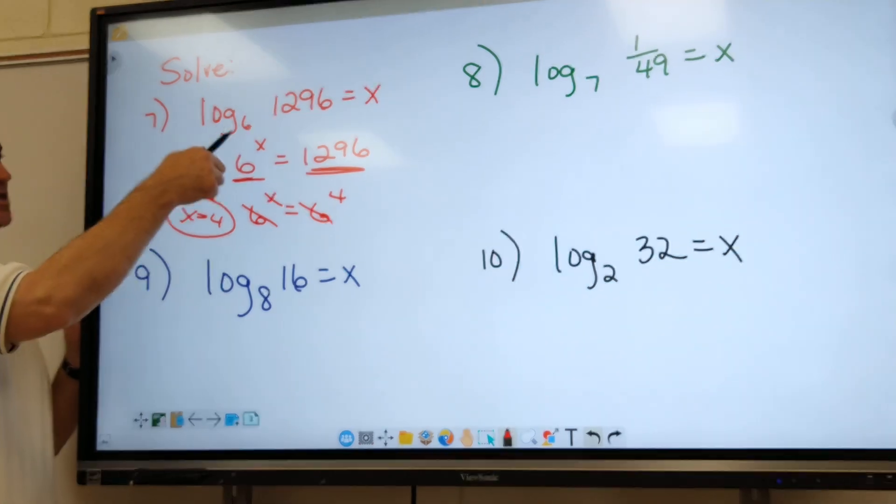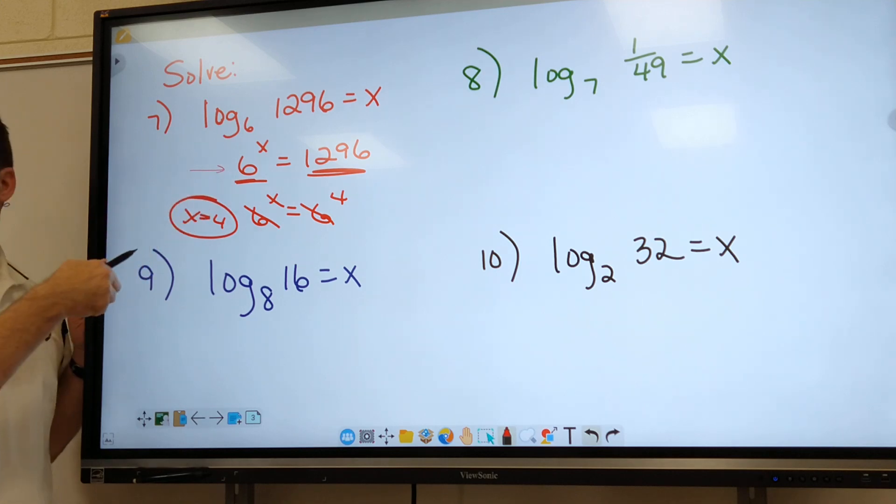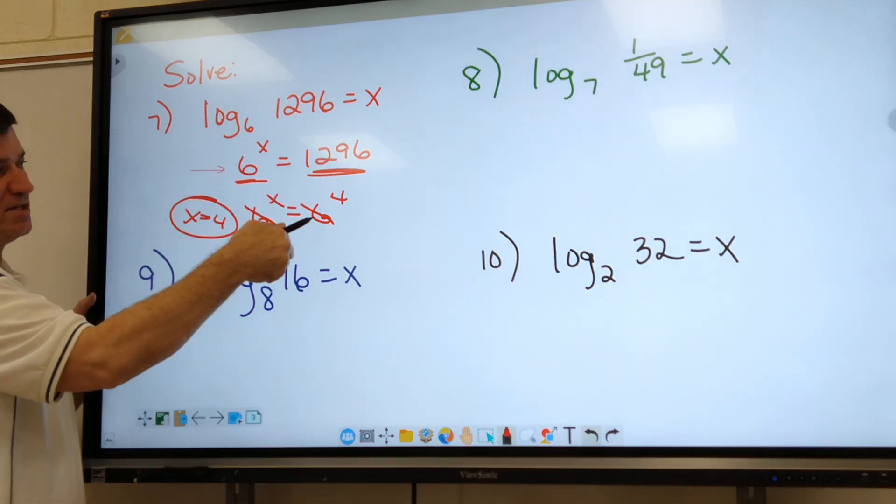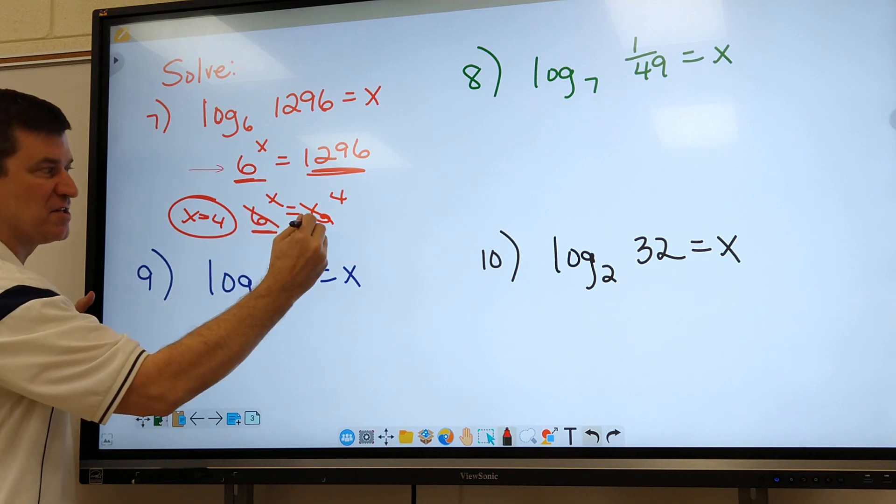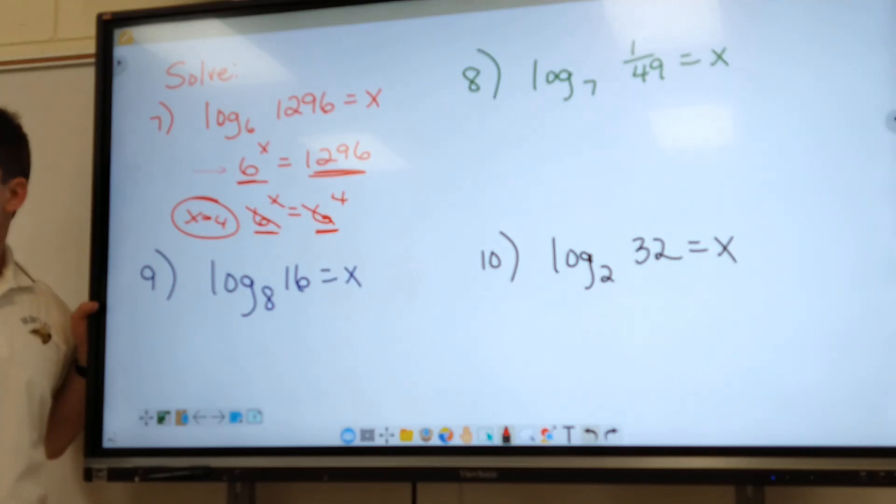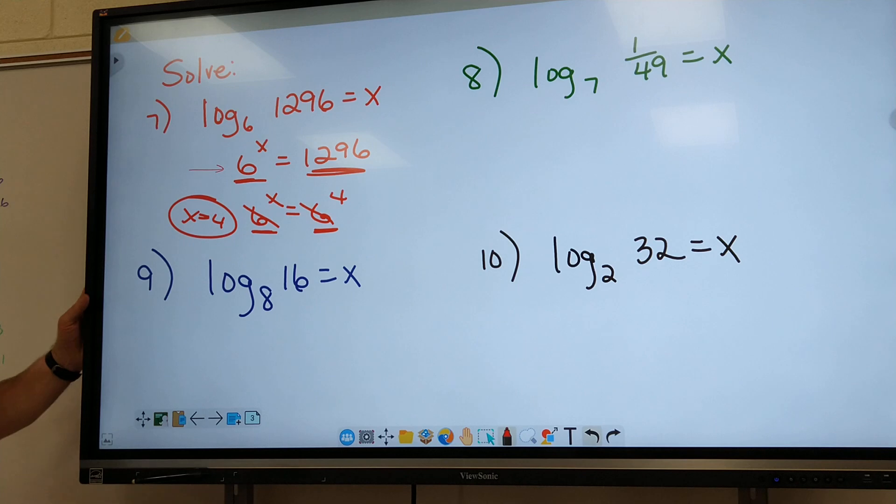All right, first step I wrote it as an exponent problem. We good there? Okay, then I changed 1296 into six to the fourth because I've got to make this base the same as this base. Got to make them the same. How do you know that 1296 is a thing of six? Okay, I promise you everyone I give you is going to be an exponent of that base. So you can either look up here or you can do it on your calculator.